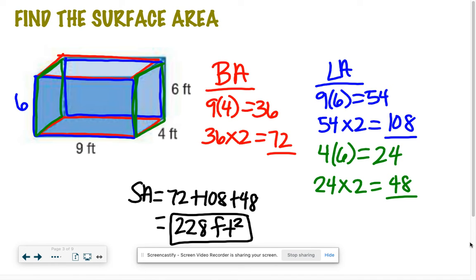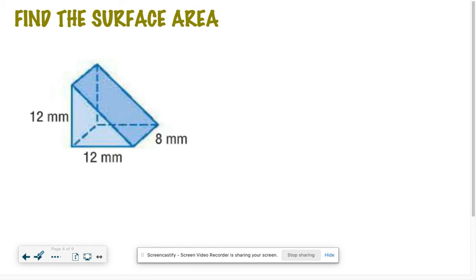There we go. That is the surface area. So if you had to construct this box, it would take you this much material to do it, or to wrap it. Okay, so in a nutshell, that's a rectangular prism finding surface area. If you want to write this down, awesome. If not, let's move on.